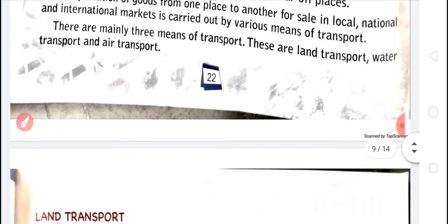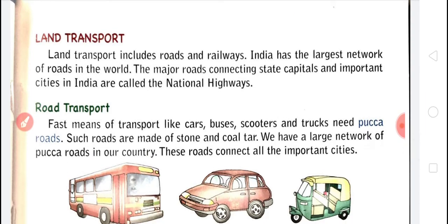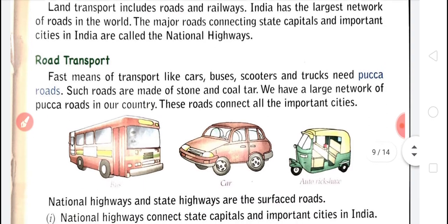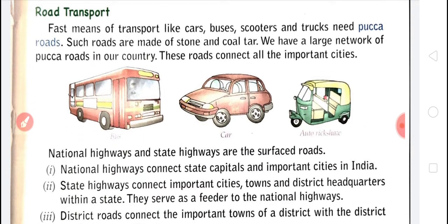Land transport includes road and railways. India has the largest network of roads in the world. The major roads connecting state capitals and important cities in India are called national highways. Fast means of road transport include cars, buses, scooters, and trucks.